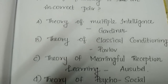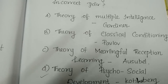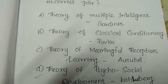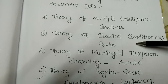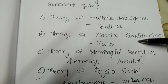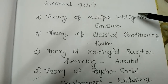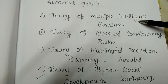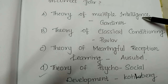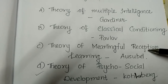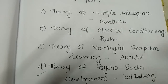Which of the following is an incorrect pair? The options are: the theory of Meaningful Reception of Learning, the theory of Psychosocial Development, the theory of Classical Conditioning. We will learn about the theory of Multiple Intelligence Theory — that is Howard Gardner. The theory of Meaningful Reception Learning is one option.